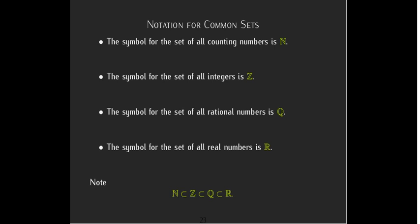And note that N is a proper subset, so proper subset means that it is not the same as the integers. N is a proper subset of the integers. The integers are a proper subset of the rational numbers. And the rational numbers are a proper subset of the real numbers.